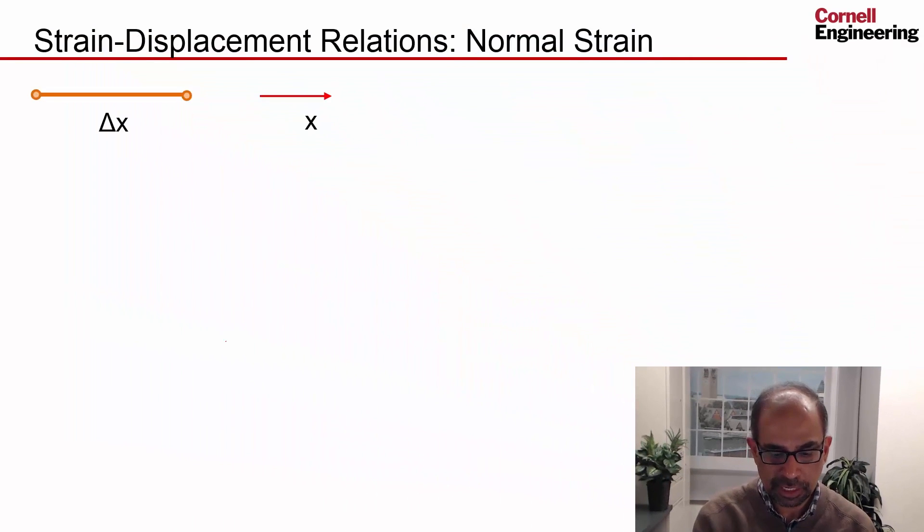For normal strain, we look at a line - let's say this is one of the edges of a little chunk of material that's in the shape of a box, and it's aligned in the x direction. So this distance is Δx.